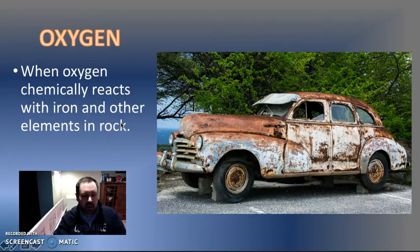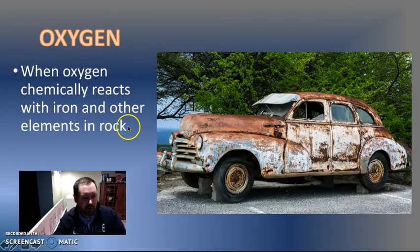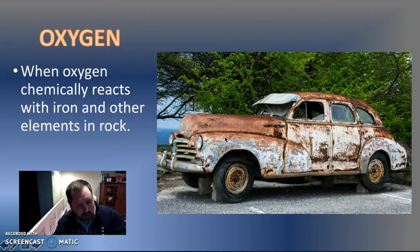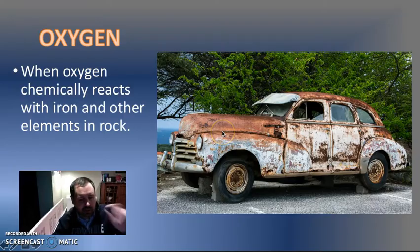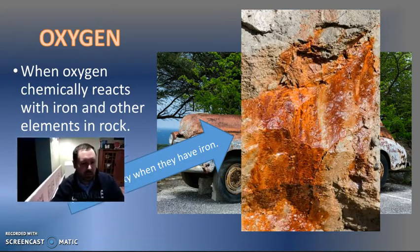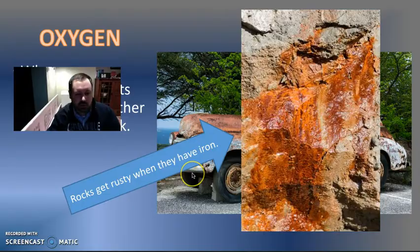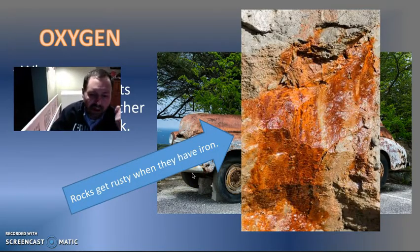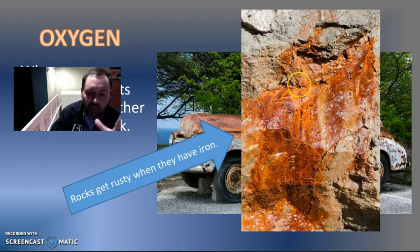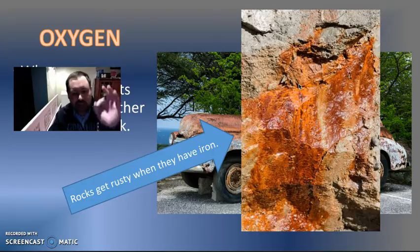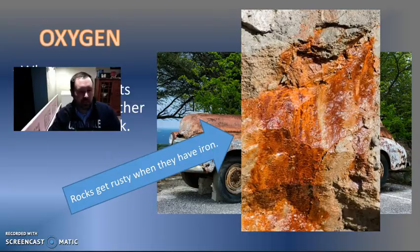Another thing is oxygen. Oxygen can chemically weather stuff — when oxygen chemically reacts with iron and other elements in rock. This is a car, but we can see that oxygen is chemically weathering this car. What does it look like on a rock? The rocks get rusty when they have iron. If you remember going through Ohio Caverns, they had a bunch of rocks like this — stained rusty red — because there's iron in those rocks, and as the water goes through the iron, it starts to stain them kind of a rusty red.